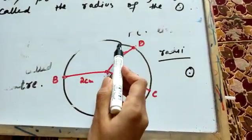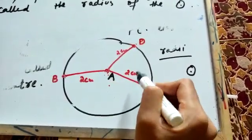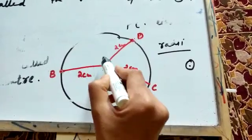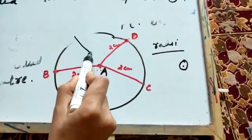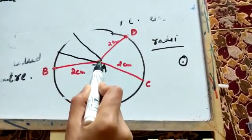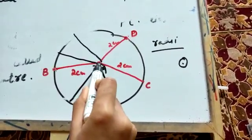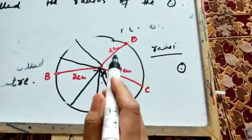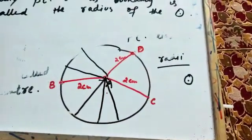There are uncountable points lying on the boundary of the circle, all at a distance of 2 cm from the center. This means we can draw uncountable or infinite radii. Just like there are infinite points on the boundary, likewise there are infinite radii of any circle. Thank you.